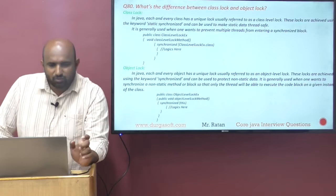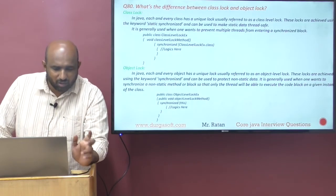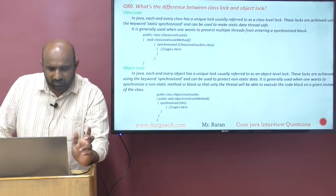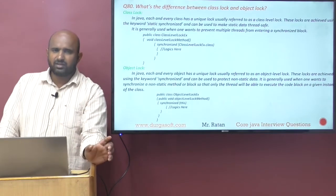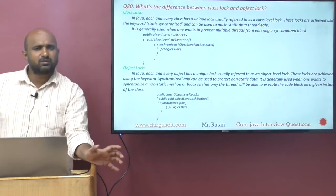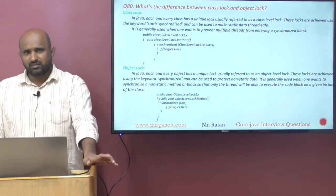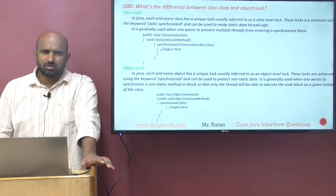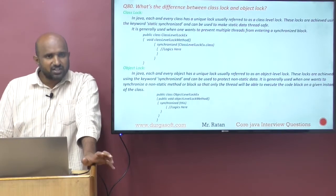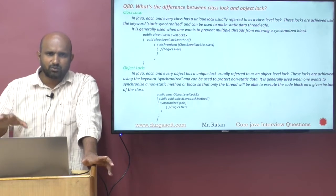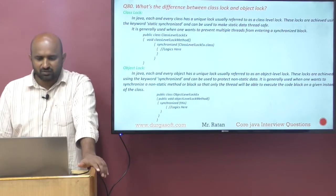Class level lock means getting the lock for the entire class. In Java, each and every class has its own lock, usually referred to as the class level lock. Just like static variables belong to the class level, the class level lock works similarly. Instance level is called the object level lock.